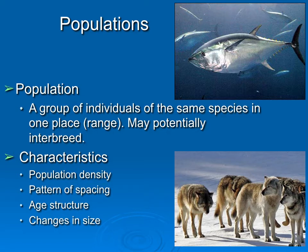The individuals form a group in that they can potentially interbreed, they share characteristics, they share genes, and those things can change over time. Populations have a characteristic density, a pattern of spacing — clumped, random, or uniform — an age structure, and populations can change in size over time. We're going to focus on the last two of these characteristics.